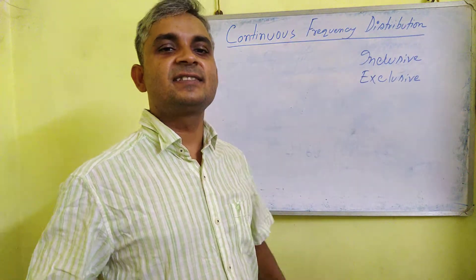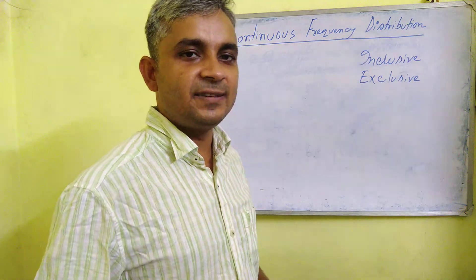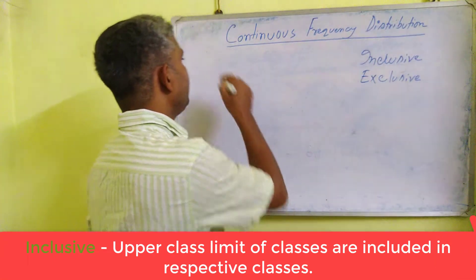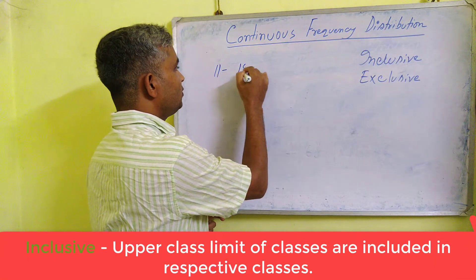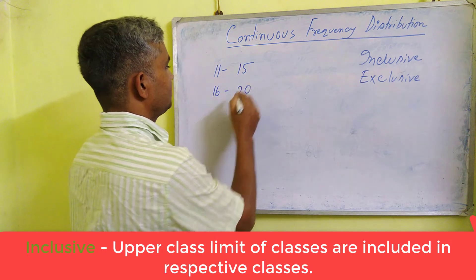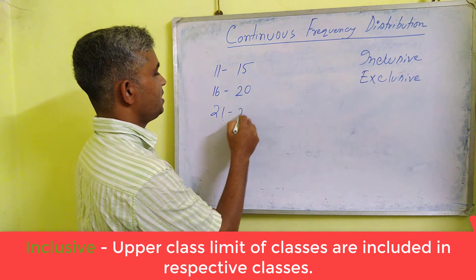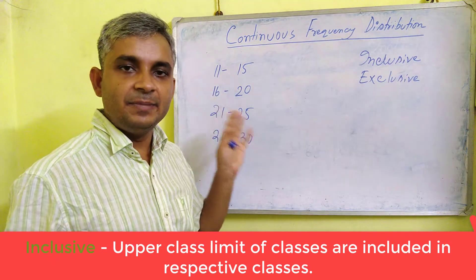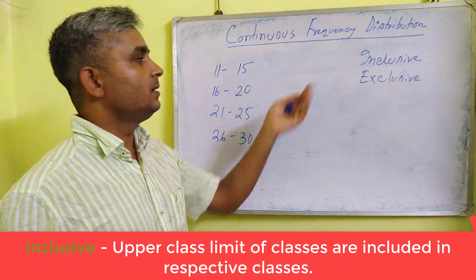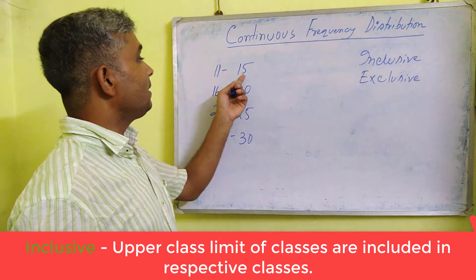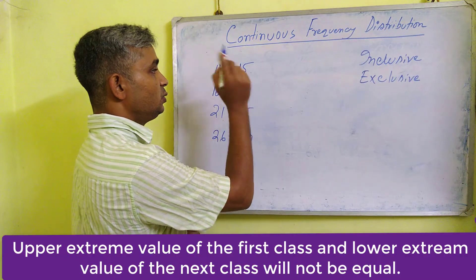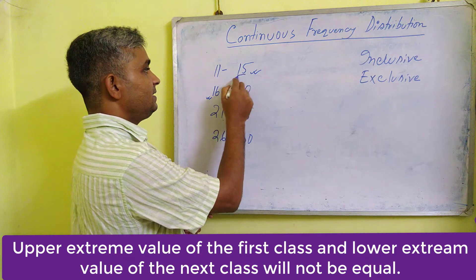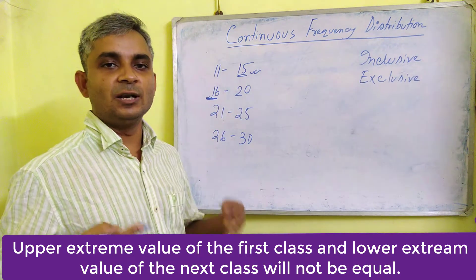I will give an example. You see, this is one group of data: 21 to 25, 26 to 30. In the inclusive method or class limit method, the upper class limit of one group and the lower class limit of the next group are not equal or the same — there is a gap between them.